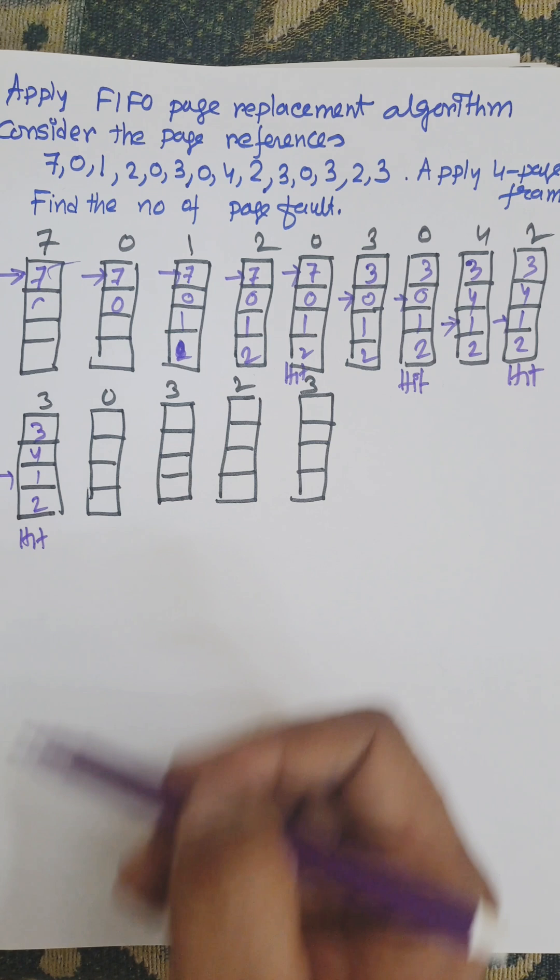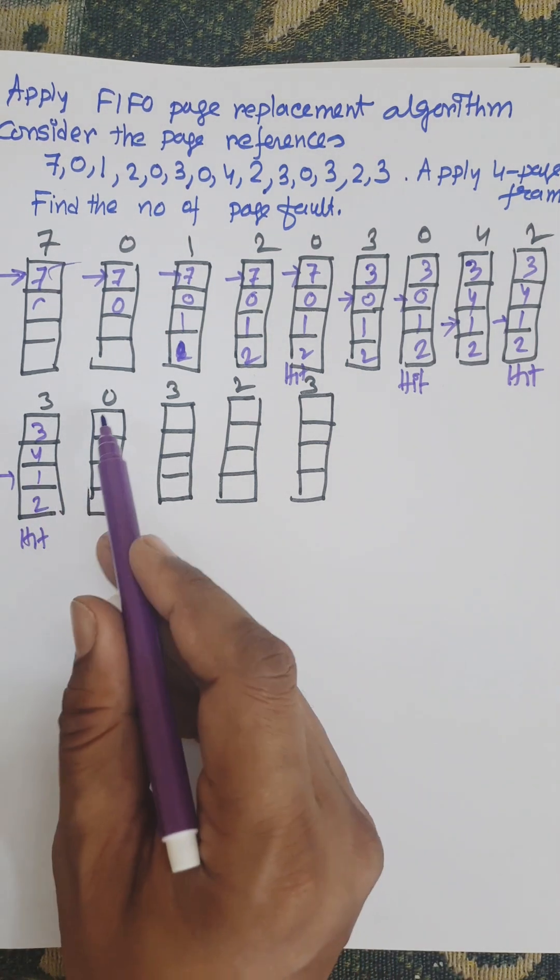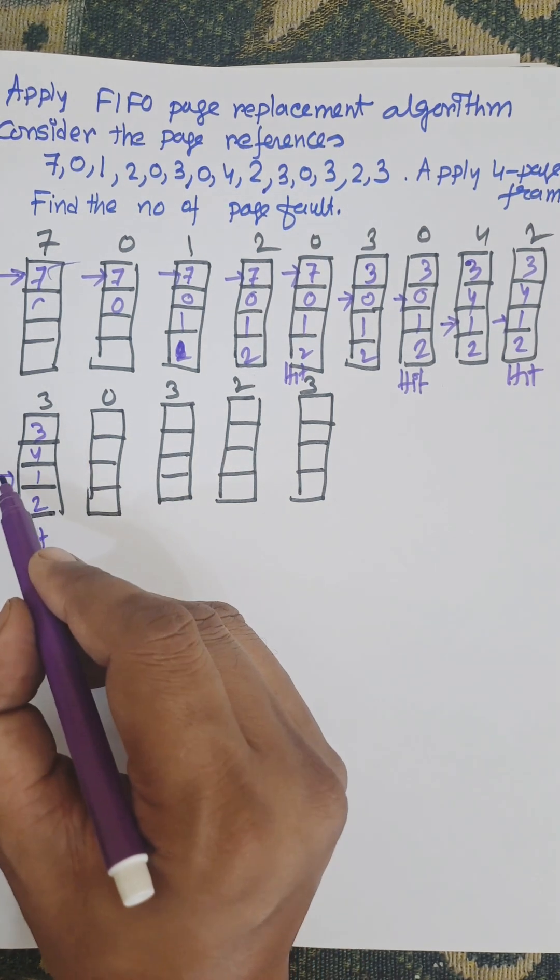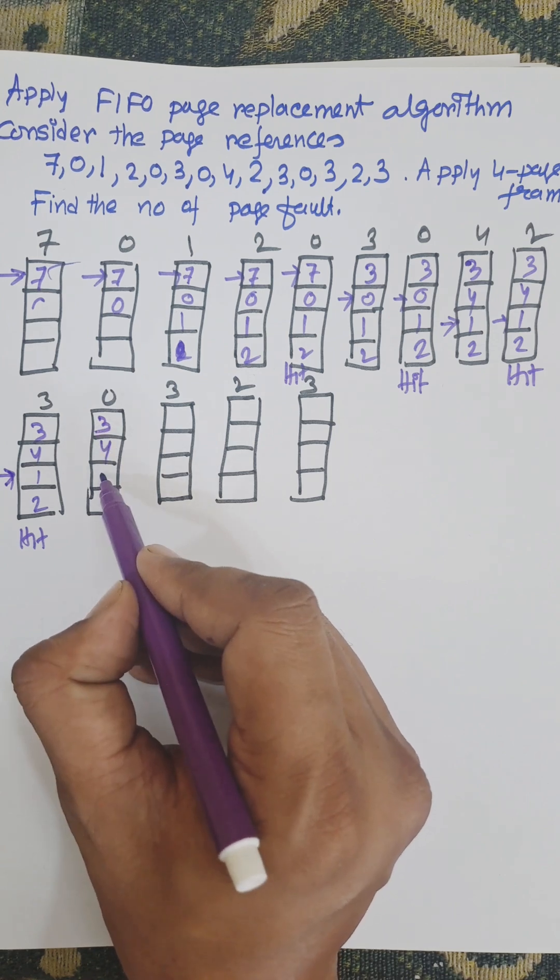Now 0. Among 3, 4, 1, 2, we need to replace 0 in the 1 page number because the pointer points to the 1 location. That is 3, 0, 3, 4, 0, 2.